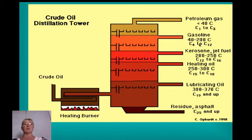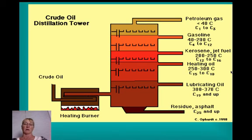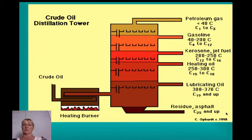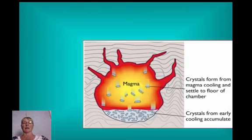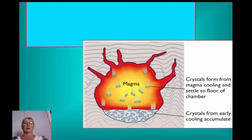Gasoline molecules, with four to twelve carbons in their chain, boil off next. The longer the carbon chains in these hydrocarbons, the higher their boiling point — so kerosene or jet fuel comes off at 200–250°C, then heating oil, then lubricating oil, and finally the heaviest residue — asphalt, with carbon chains of 25 or higher — remains. Distillation is thus a way to separate components of a liquid mixture.